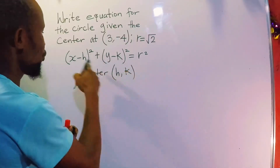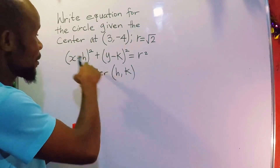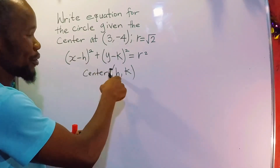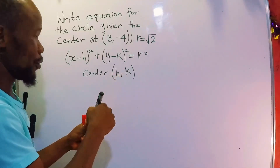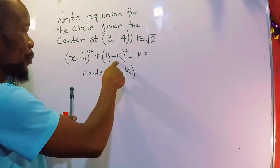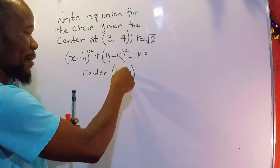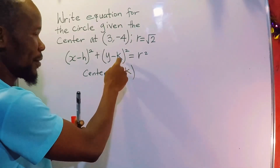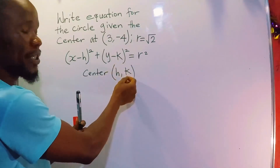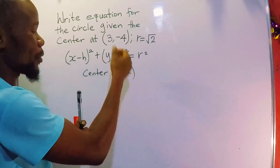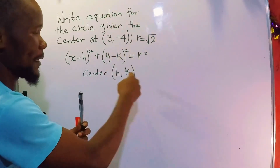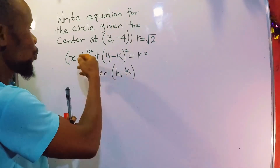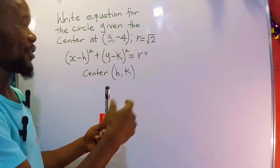So when it is negative, when it is coming outside of this equation, it will change to positive. When it is negative, when it is coming outside of the equation, it will change to positive — and vice versa.